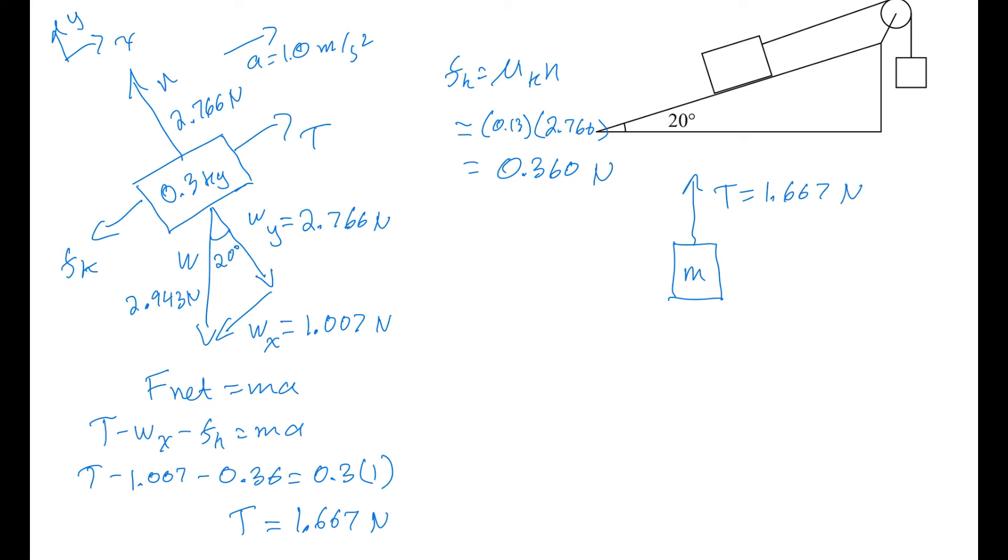And we know, if this is accelerating upwards, then this has to accelerate downwards this way. So we know that there's going to be an acceleration in this way of 1.0 meters per second squared. So downwards is going to be our positive direction. And this is W.